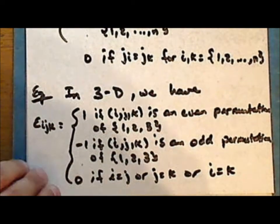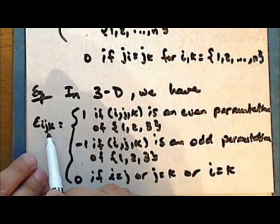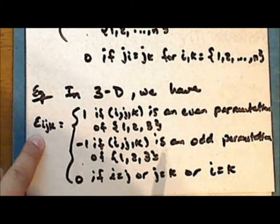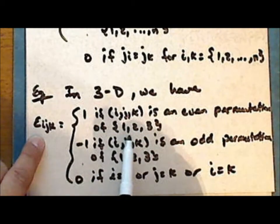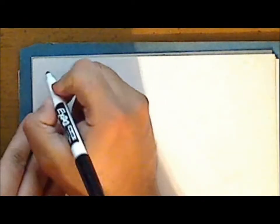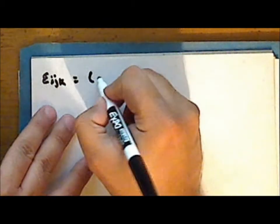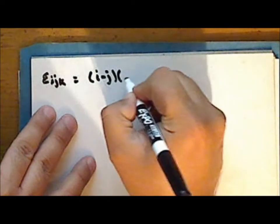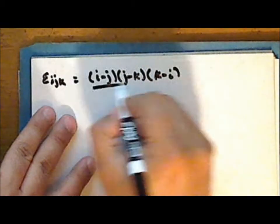In other words, it is 0 when there is a repetition of any index, where I, J, K represent some ordered arrangement of the numbers 1, 2, and 3. We have a simple formula for the three-dimensional Levi-Civita permutation symbol: it equals the product (I minus J) times (J minus K) times (K minus I), all divided by 2.